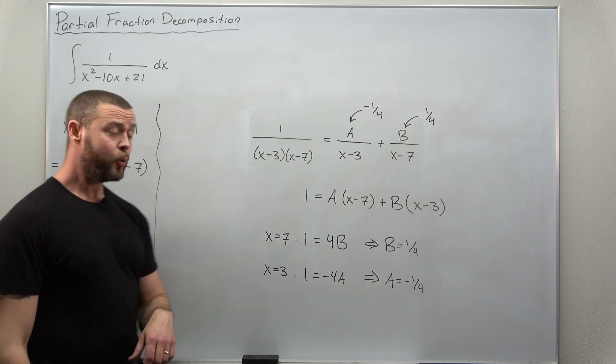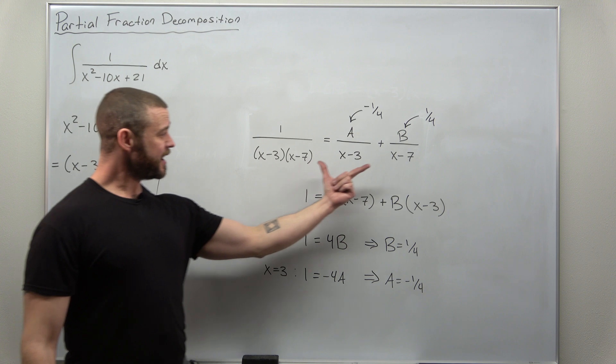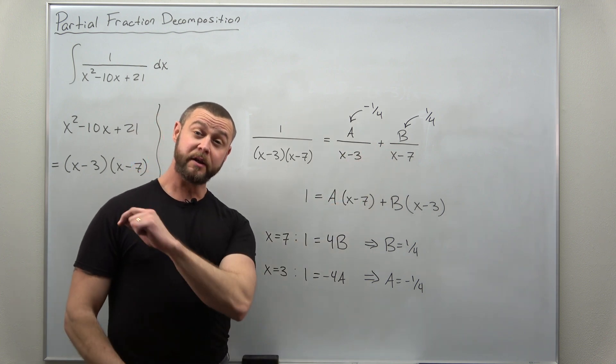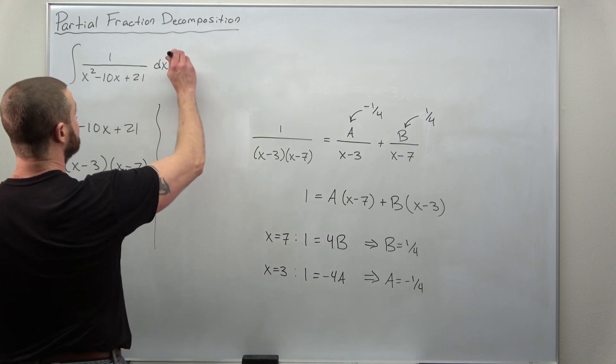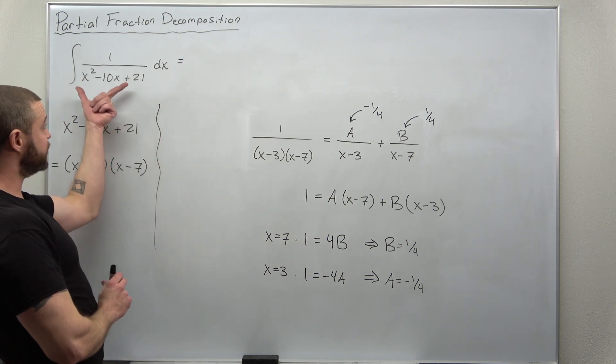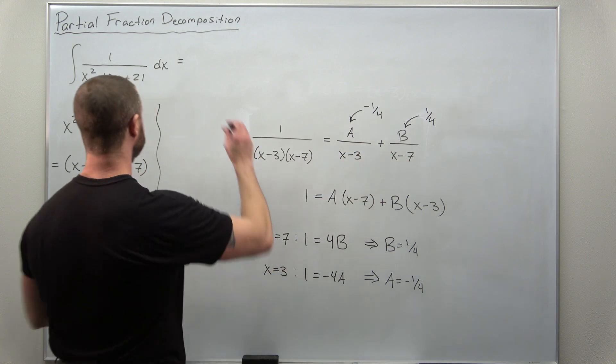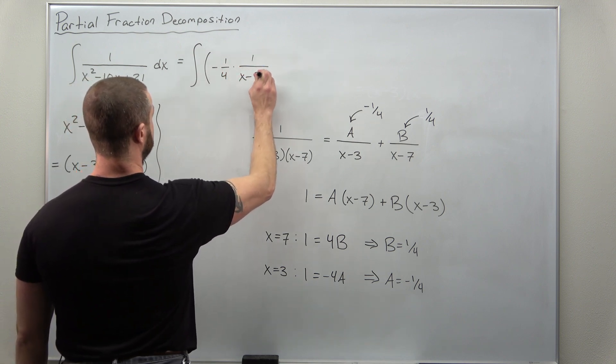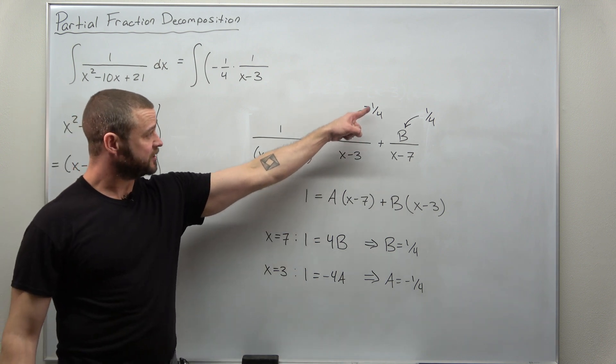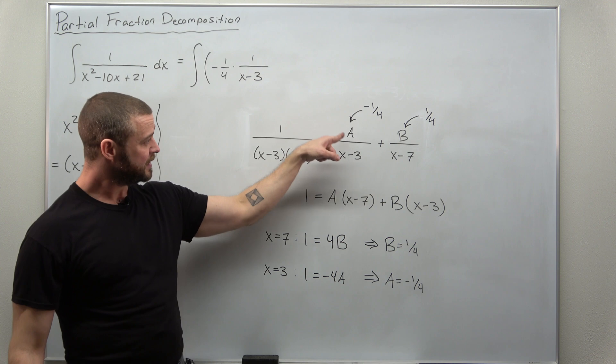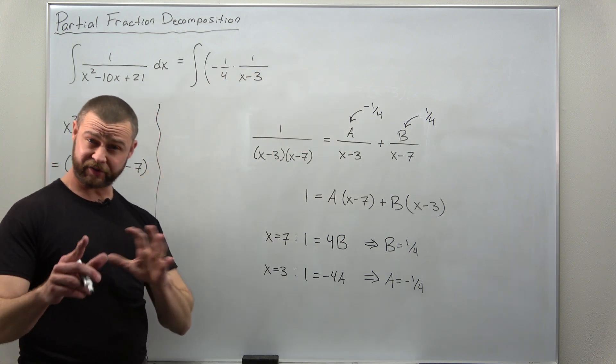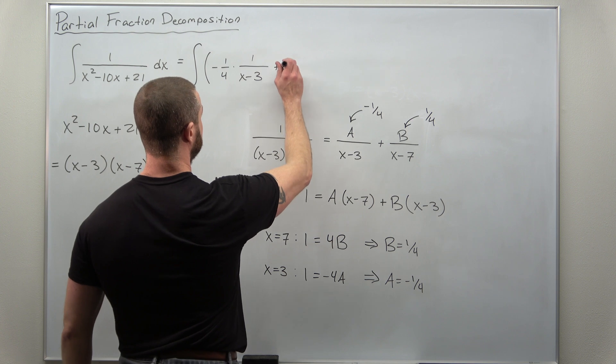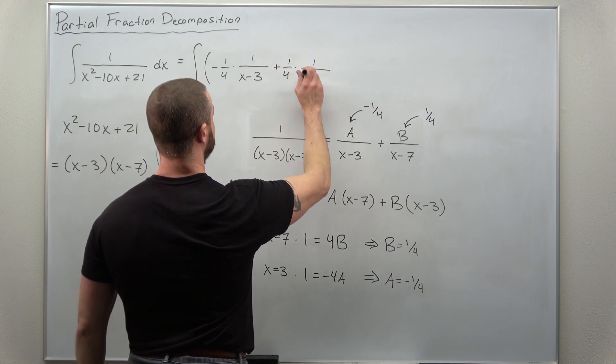All right, now we took our function, factored the denominator, and then we rewrote it in a form that is much easier to integrate. Both these terms will evaluate to natural logs. Let's put this all together. So we take our original function in the integral and we rewrite it as several partial fractions. Notice I'm taking the fractions A and B, negative 1 fourth and positive 1 fourth. Instead of leaving them in the numerator, I'm going to pull them out front just to make it look a little nicer. The other term we get is a positive 1 fourth times 1 over x minus 7.